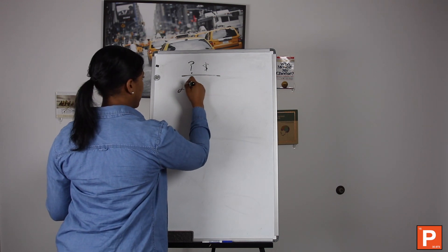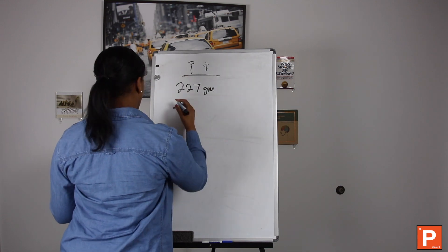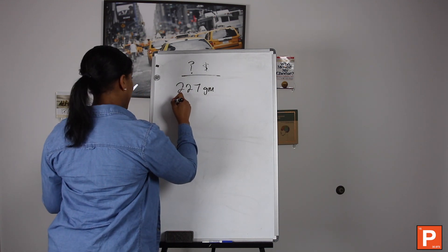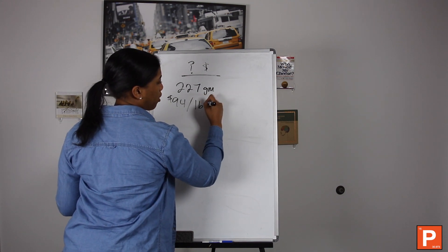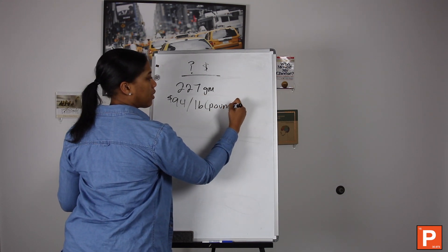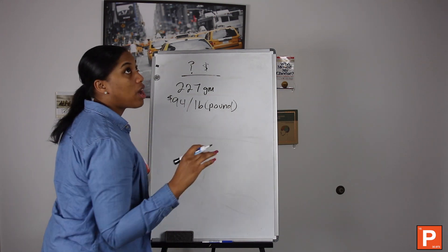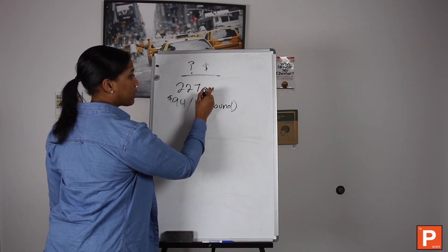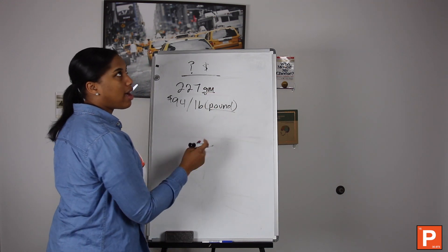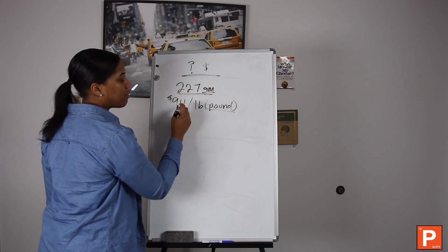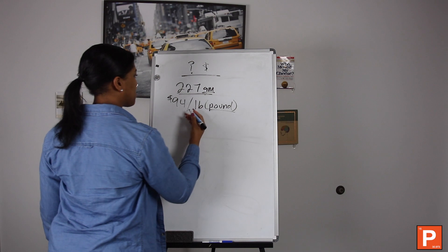Basically what you do is you see what you're given. They said it's 227 grams, and we know also that it's $94 per LB or pound. LB is just short for pounds. Basically what we already know clearly is that we're going to have to convert grams to pounds, because before we can get to this dollar amount we got to figure out if they've given us 227 grams, how many pounds is 227 grams.